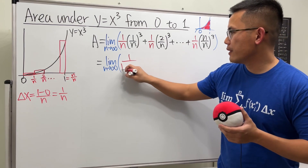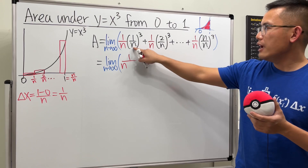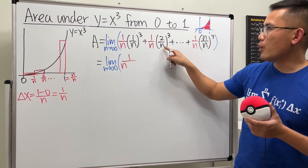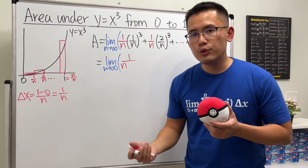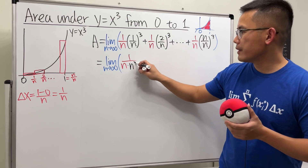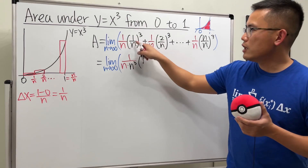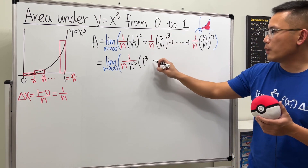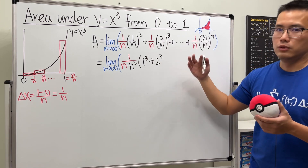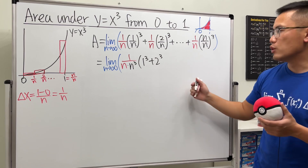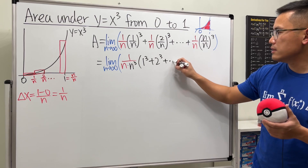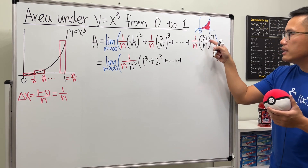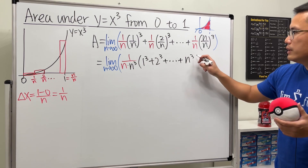Everybody has a factor of 1/n, so let's factor that out. Also, everyone has n in the denominator raised to the third power, so we can factor out 1/n³ as well. What's left inside are: 1³ for the first term, 2³ for the second, 3³ for the third, and so on up to n³.